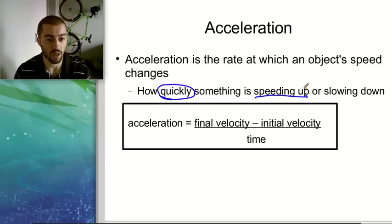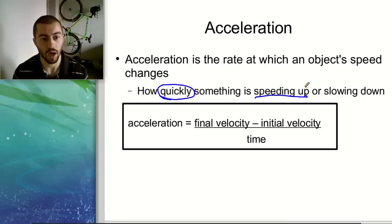Or the same thing with speeding up. If you, let's say, are going downhill on your bike, you're going to speed up really fast, that would be a high acceleration. But if, let's say, you're starting from a stop on flat ground, it might take you a while to gain speed, and that would be a lower acceleration. So acceleration basically tells us how quickly our speed is changing.